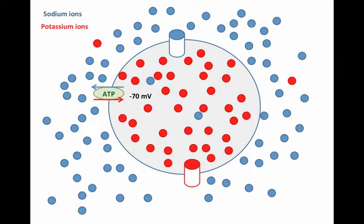So here we have an oversimplified example of a cell sitting at a typical resting membrane potential of minus 70 millivolts.